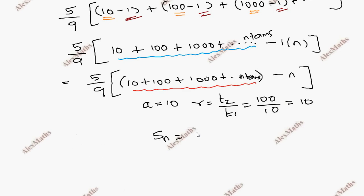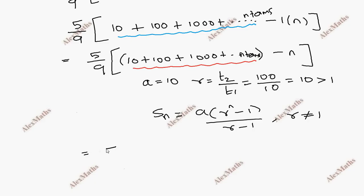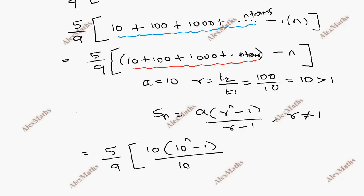The Sn formula is a times r power n minus 1, divided by r minus 1. Here r is equal to 10, which is greater than 1. So we apply: 5 by 9 times bracket open, then a times r power n minus 1 divided by r minus 1, which is 10 times 10 power n minus 1 divided by 10 minus 1, minus n, bracket close.